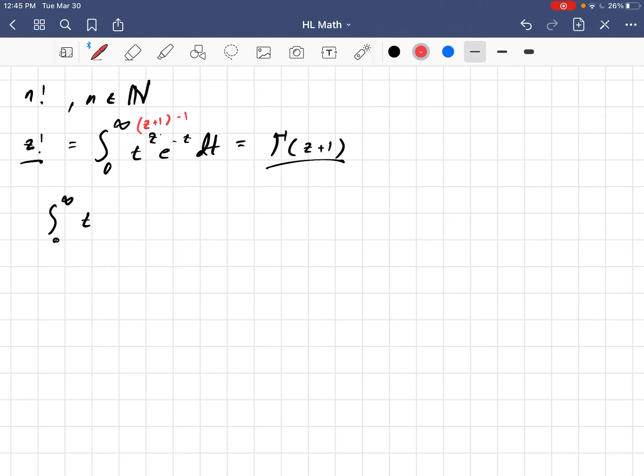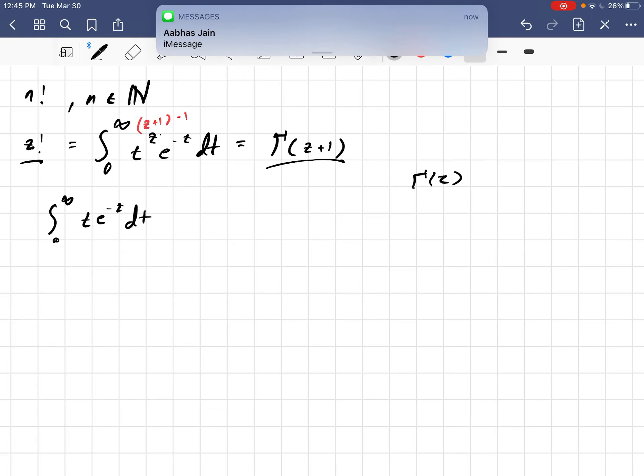In other words, we want to find gamma of 2 as an example here. So, if we want to find gamma of 2, that would be t to the 2 minus 1, or just t to the 1, t e to the negative t dt. We want to evaluate that integral. Abash Jane is messaging me. Hi, Abash.